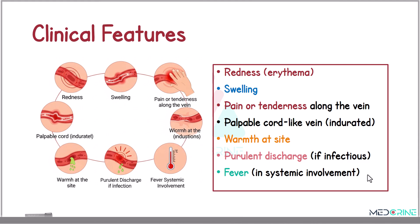The key signs and symptoms of phlebitis include redness or erythema, swelling, pain or tenderness along the vein, a palpable cord-like indurated vein, and warmth at the site. If infectious, there will be purulent discharge present, and with systemic involvement, fever may occur.